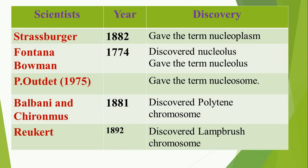Strasburger was also the person who in 1882 gave the term 'nucleoplasm.' Nucleolus was discovered by Fontana, but the term 'nucleolus' was given by Baumann. Oudet in 1975 gave the term 'nucleosome.' There are two types of special chromosomes — polytene chromosomes and lampbrush chromosomes. Polytene chromosomes were discovered by Balbiani in Chironomus in 1881. Lampbrush chromosomes were discovered by Rückert in 1892.